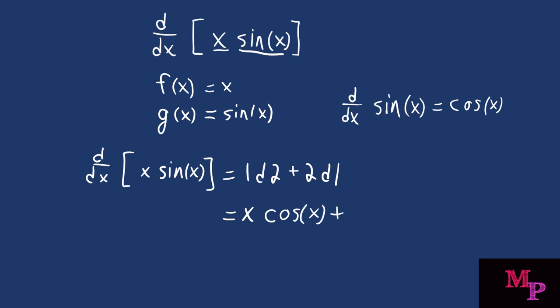That is added to 2d1: two is your second function, sine of x, and d1 is the derivative of your first function — the derivative of x is just 1. Simplifying: 1 times sine of x is just sine of x, giving us the final answer: x·cos(x) + sin(x). And that's all you have to do when using the product rule.